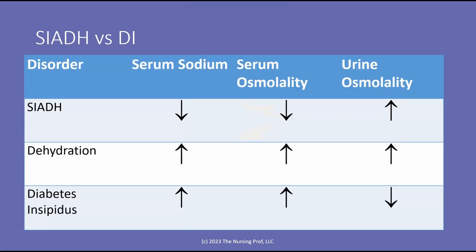Let's compare these two disorders: SIADH versus diabetes insipidus. In SIADH, when you look at your patient's labs, you're going to see a low serum sodium, a low serum osmolality, and a high urine osmolality, because the urine will be concentrated — we have too much anti-diuretic hormone and we're not diuresing.